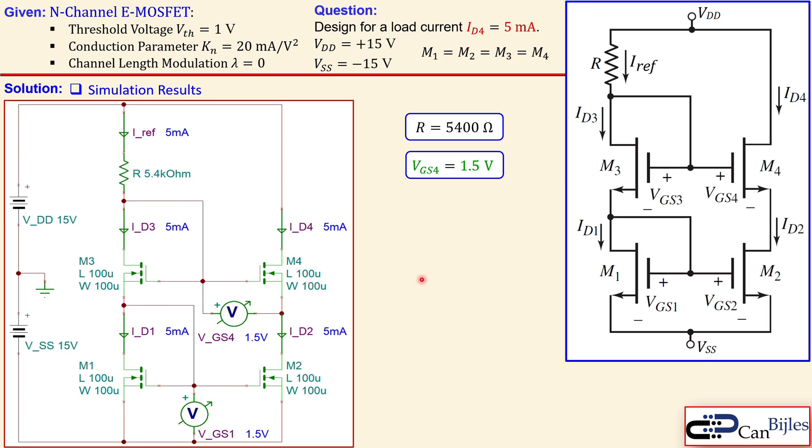Now this is the simulation circuit. You see here the ID3, ID4, ID1, ID2, and also the gate-to-source voltage. You see actually also the IREF here, and this is the 5.4 kilo ohms, and this is VDD and VSS here, DC power supply. Now you see indeed 5 milliamps for each, so you see that indeed this is correct, and also the 1.5 volts here for VGS4, VGS1, and also the others are exactly the same. So that means this is checked.